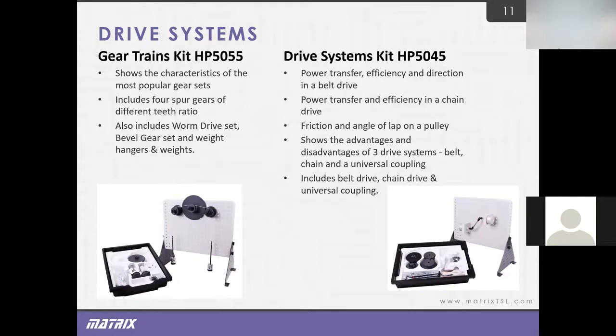Another kit that we have is also named drive systems. This kit demonstrates the advantages and the disadvantages of three popular drive systems: belt, chain, and universal coupling. It uses a manual rotated frame with a low friction cantilever linkage, adjustable masses, and a spring to apply force. The kit introduces students to key engineering terms, such as gear ratio, pulley ratio, and efficiency. That's how we help you with the drive systems.